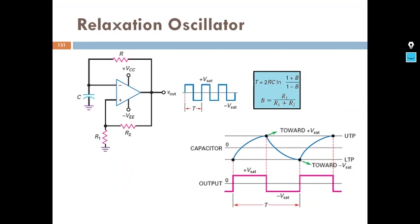Hello student, welcome back. The next topic is relaxation oscillator. This is one of the applications of operational amplifier. Here you can see the operational amplifier is connected. In the feedback path, a resistor is connected and a capacitor is also connected.